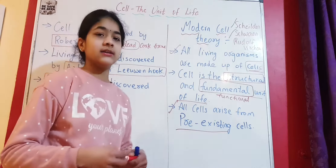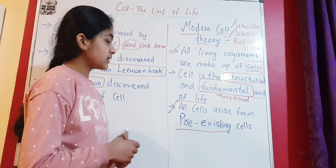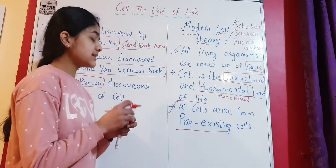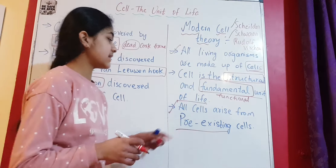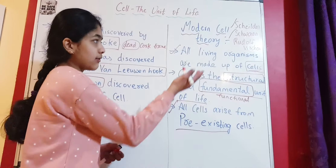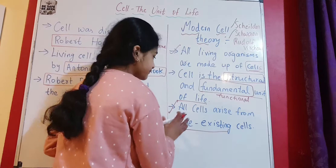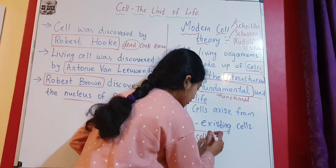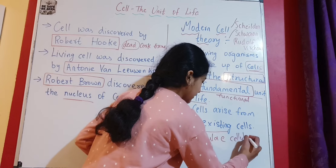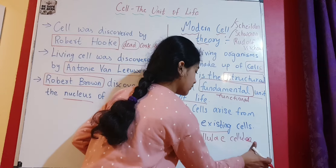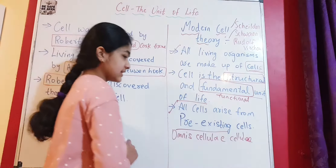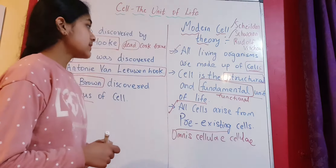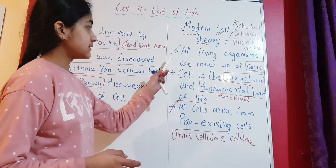Schleiden and Schwann thought that cells came from nothing — like magic. But Virchow explained that all cells arise from pre-existing cells, meaning by the help of cell division — mitotic divisions, meiotic divisions, etc. So all cells are formed from pre-existing cells. In Latin, this phrase is called 'Omnis cellula e cellula.'